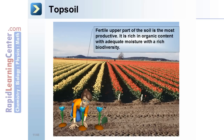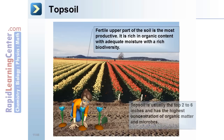Topsoil is the fertile upper part of the soil — the most productive layer, rich in organic content with adequate moisture and a rich biodiversity. Topsoil is usually the top two to six inches and has the highest concentrations of organic matter and microbes.